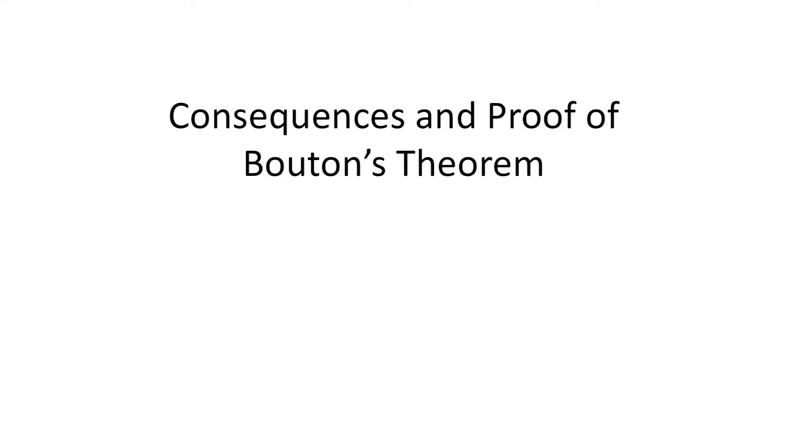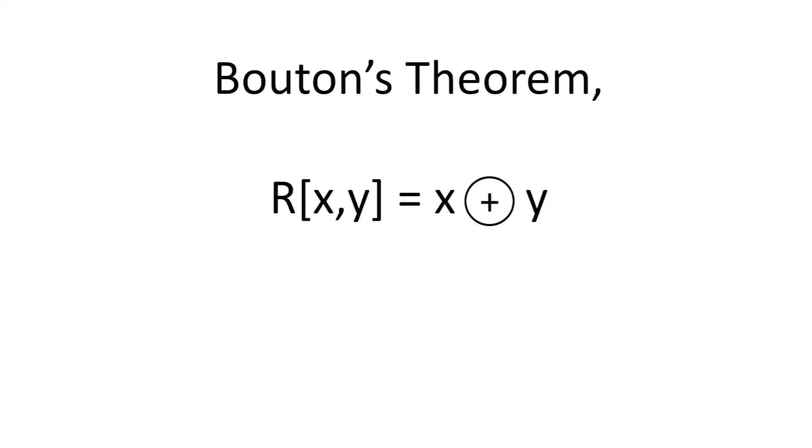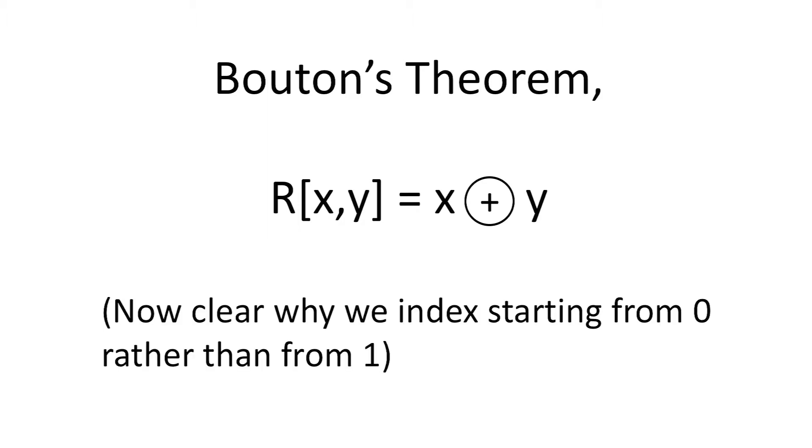Let's now examine the consequences and proof of Botan's theorem, which states that the Grundy number of the rook at coordinates x and y is the nim sum of x and y. Notice that the simplicity and brevity of this statement depends on our having started both indices from zero. If we had instead followed the conventional chess notation in which rows are numbered beginning from one, then the statement of Botan's theorem would be considerably more complicated.